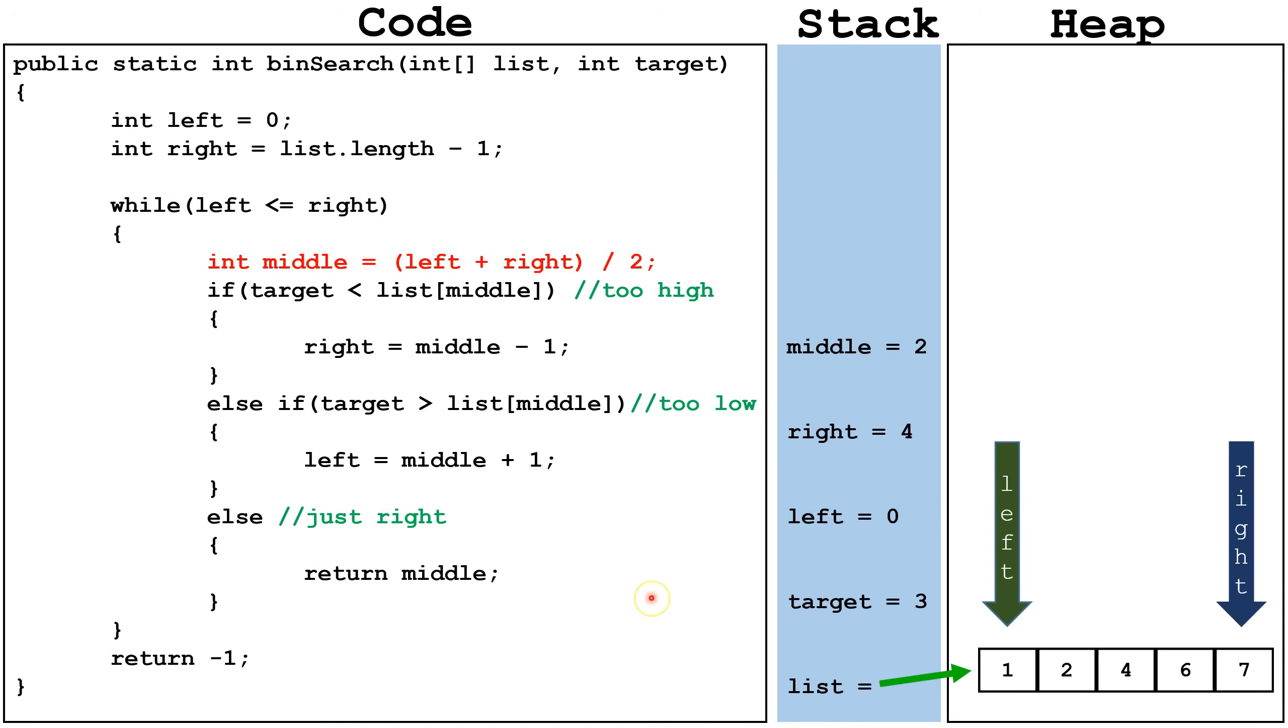Next, we're going to calculate the value in the middle of the left and the right arrow. So we're going to say left plus right, which is 0 plus 4, divided by 2, which is 2. So this is the index we're going to look at. Now we're going to check if our target, the value we're looking for, which is 3, is that less than list index middle. Index middle is 2, so we're going to go 0, 1, 2.